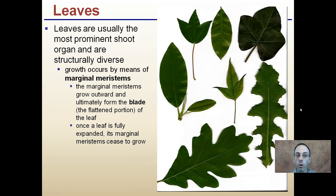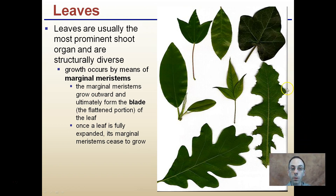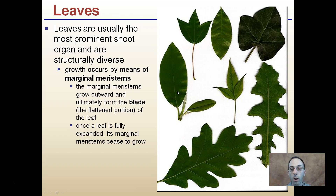Starting with general facts: leaves are usually the most predominant shoot organ and are structurally diverse. Growth occurs by means of marginal meristems, which grow outward and ultimately form the blade portion — the flattened portion of the leaf. Once the leaf is fully expanded, the marginal meristems cease to grow. So once they reach maturity, those leaves will no longer grow.